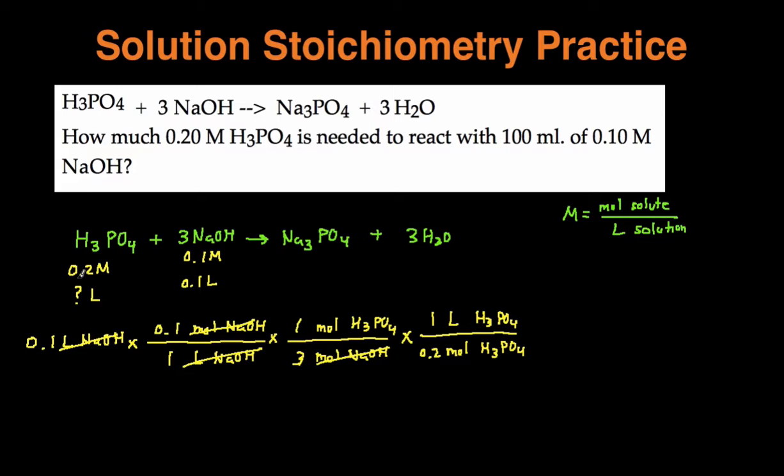Whenever you're working with molarity, this number always goes in front of the mole component. And then for the liter component, it's always just going to be 1 liter. Then the moles of H3PO4 is going to cancel each other out, leaving us with just the units, liters of H3PO4. So plug it into your calculator and you get something around 0.017 liters of H3PO4. And that's the amount of volume that we need to react completely with the NaOH.